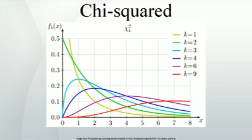Table of χ² value versus p-value. The p-value is the probability of observing a test statistic at least as extreme in a chi-squared distribution. Accordingly, since the cumulative distribution function for the appropriate degrees of freedom gives the probability of having obtained a value less extreme than this point, subtracting the CDF value from 1 gives the p-value. The table below gives a number of p-values matching to χ² for the first 10 degrees of freedom. A low p-value indicates greater statistical significance, i.e., greater confidence that the observed deviation from the null hypothesis is significant.